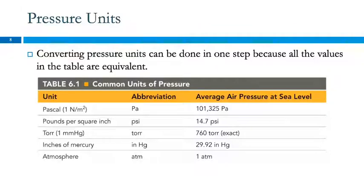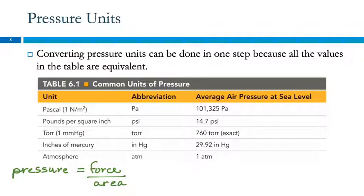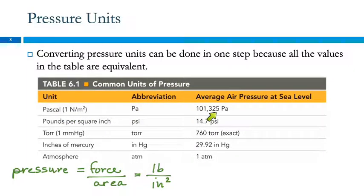Pressure equals force divided by area. Pounds per square inch makes sense: a pound is force due to gravity, divided by square inches of area. The SI unit of pressure is the Pascal (Pa), which is a Newton per square meter — a much smaller unit. 101,325 Pascals equals one atmosphere.